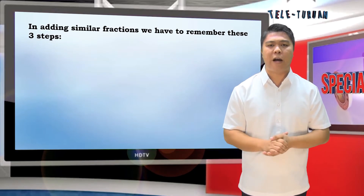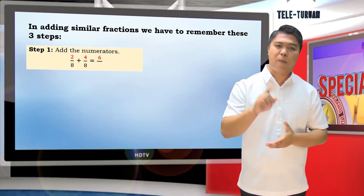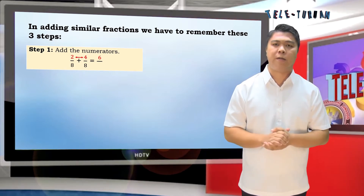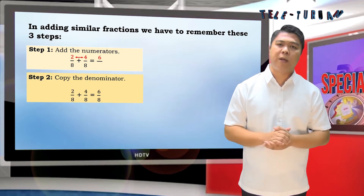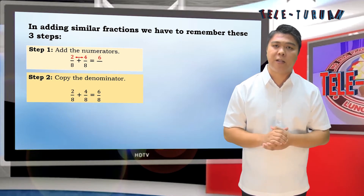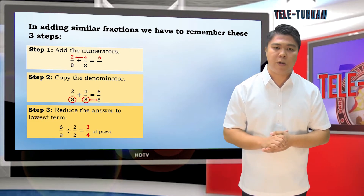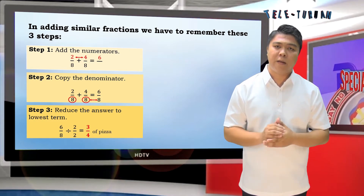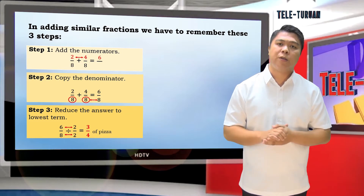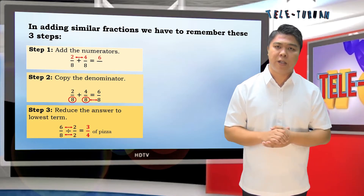In adding similar fractions, we have to remember these three steps. Step 1: add the numerators — 2 plus 4 is 6. Step 2: copy the denominator — their common denominator is 8 — that gives us 6 over 8. Step 3: reduce the answer to lowest term — 6 over 8 divided by the GCF, which is 2, is 3 fourths. So, 3 fourths of the pizza did Vito and JC eat.